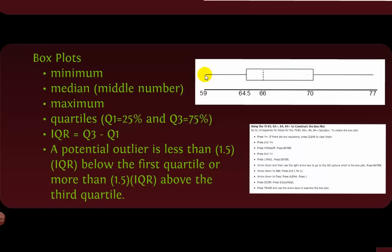From the box plot we can see the minimum and maximum, observe skewing, and identify outliers. Outliers are defined as values that are 1.5 times the IQR (interquartile range, which is Q3 minus Q1) either below the first quartile or above the third quartile. Those are possible outliers.